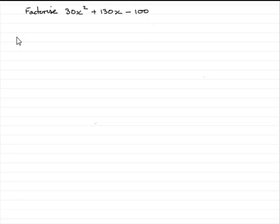And in this example you'll notice that 10 goes into each one of these three terms. So what I would start off with is to write out the expression 30x² + 130x - 100 and say that this is identical to 10 bracket, and then we need 3x² inside here plus 13x minus 10. That will give us this.